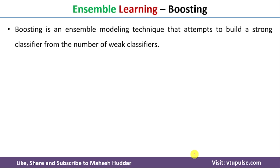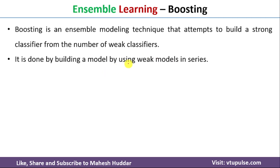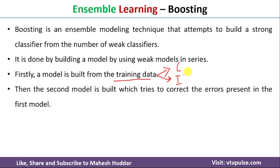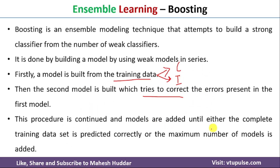The next ensemble learning method is boosting. Boosting is an ensemble technique that attempts to build a strong classifier from a number of weak classifiers. Given training data, we train any basic machine learning classifier. After training, some of the training data will be classified correctly and some incorrectly. What we do is take the incorrectly classified data, assign more weightage to it, and try to correct those errors in the second model.